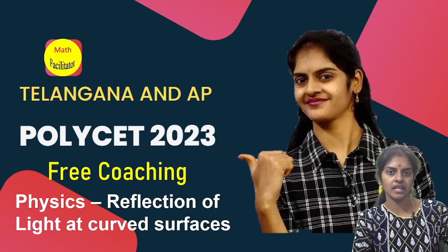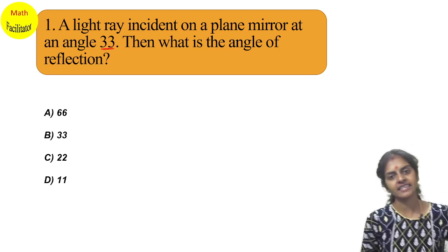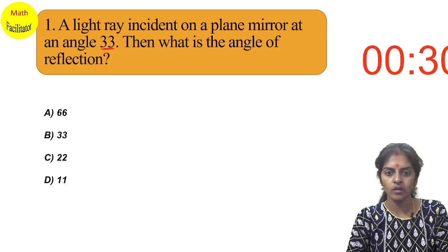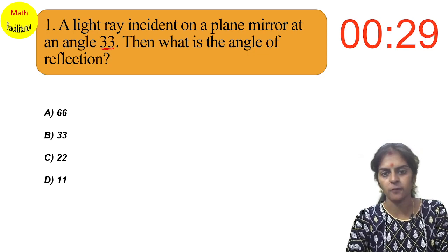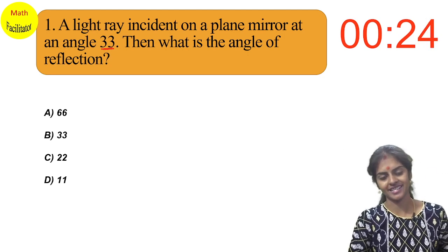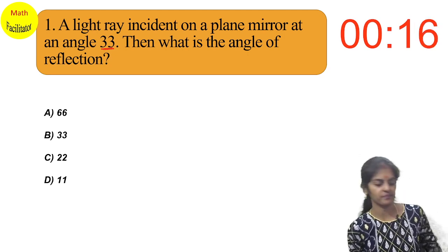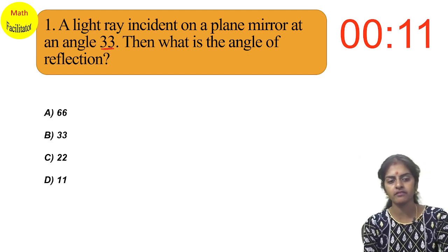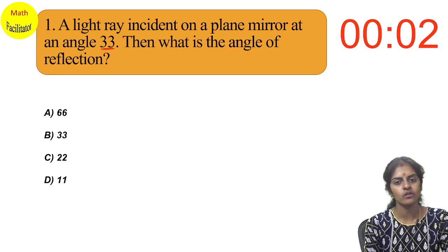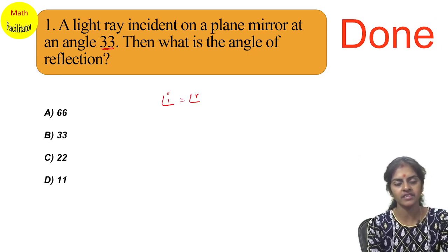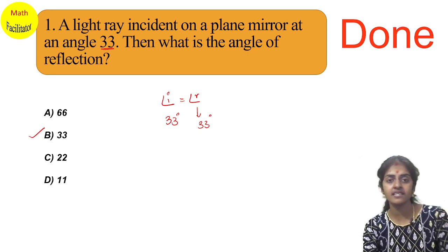First question: a light ray is incident on a plane mirror at an angle of 33 degrees. What is the angle of reflection? Your time starts now. The angle of incidence is always equal to the angle of reflection, as per the laws of reflection. So if the angle of incidence is 33 degrees, the angle of reflection is also 33 degrees. Option B was correct.